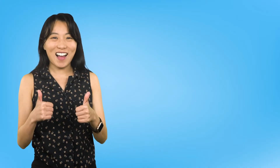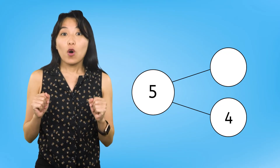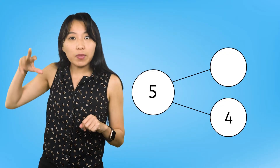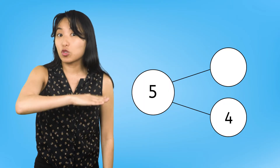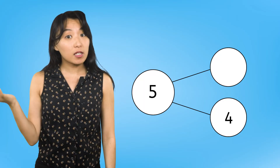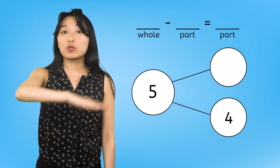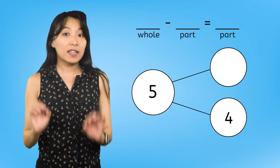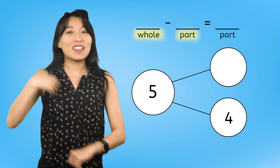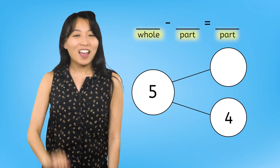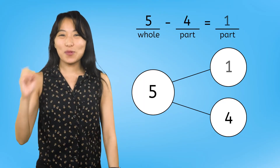Great job! Now, what would we need to do if one of the parts disappeared from the number bond? Would we use addition or subtraction to find the missing part? Subtraction! Our subtraction sentence will be in this order: whole minus part equals the other part. So, five minus four equals one.